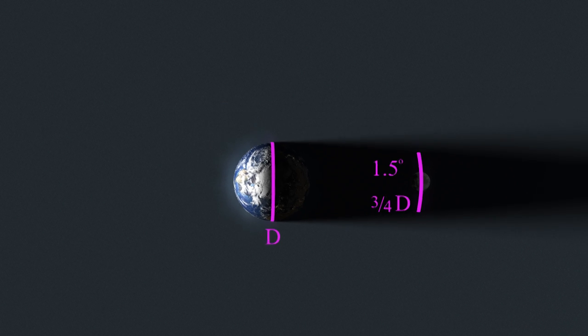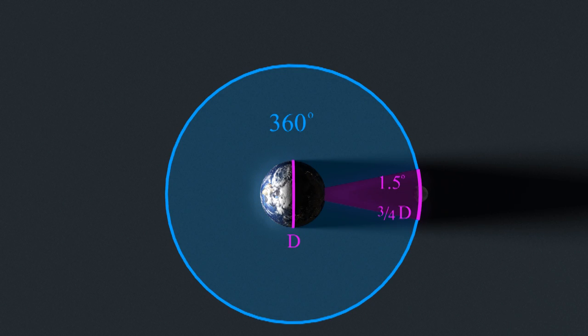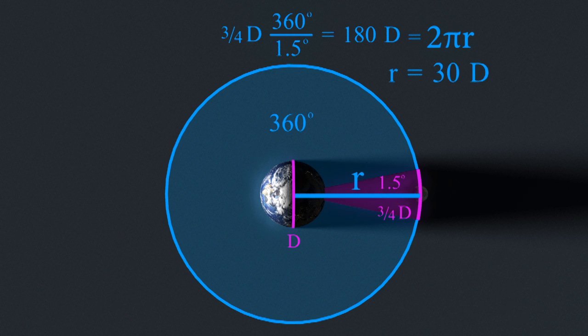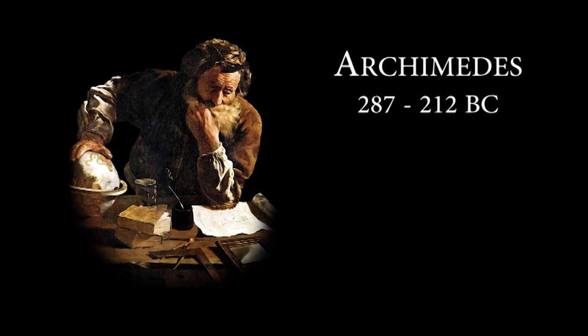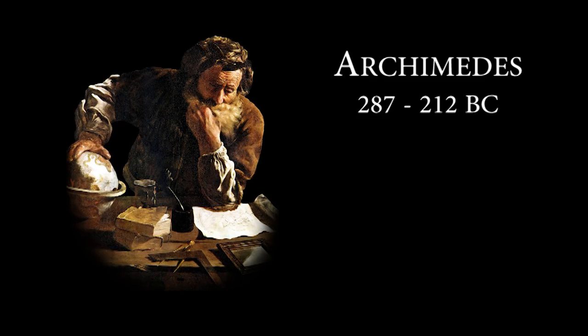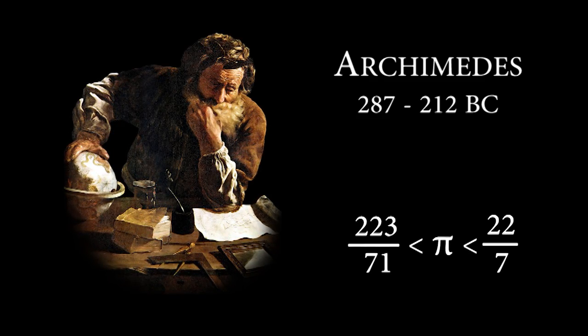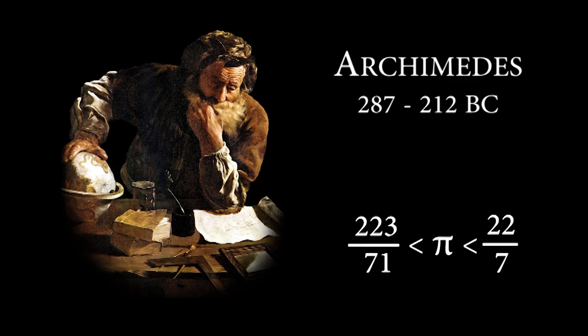We also can find the size of the orbit from the size of the shadow, as three-fourths of an Earth times 360 degrees divided by 1.5 degrees. And that is equal to two pi times the distance to the moon, giving us a moon that is 30 Earth diameters away. By the way, Aristarchus also did not have a good value for pi, which had to wait until Archimedes a few decades later.